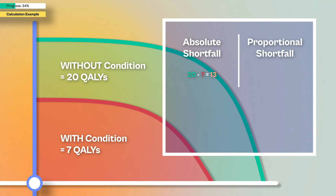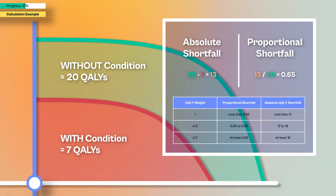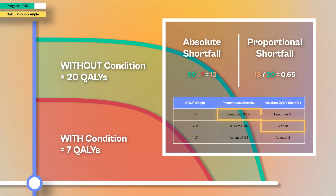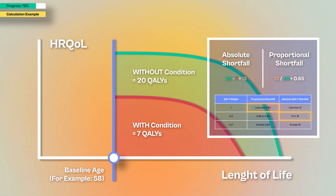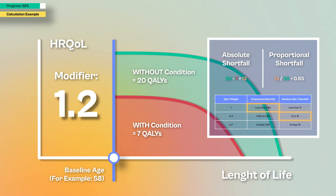The proportional shortfall is the absolute shortfall divided by the general population QALYs — so 13 divided by 20 — which is 0.65, or 65%. Looking at the table, an absolute shortfall of 13 falls in the 12 to 18 range, giving a weight of 1.2. The proportional shortfall of 0.65 is below 0.85, which gives a weight of 1. Since NICE always takes the higher of the two, this treatment would get a severity weight of 1.2.